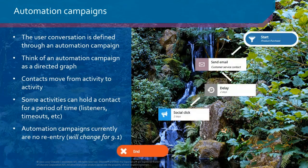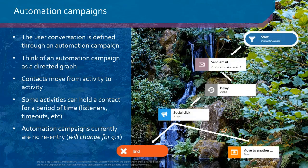One of the big differences between the old engagement automation and the new marketing automation is that now we have a defined flow — think of it as a waterfall. You start at the top and work your way down, rather than the very free-form approach we had in the past where you could loop everywhere and it was hard to understand how it all worked. Now it's a sequential flow where a contact moves from activity to activity. Currently automation campaigns have no re-entry, but we're adding controls in 9.1 that will allow the user to specify how many times a contact can go through a campaign, to protect contacts from being overexposed to marketing messaging or caught in infinite loops.